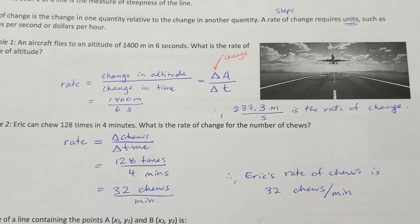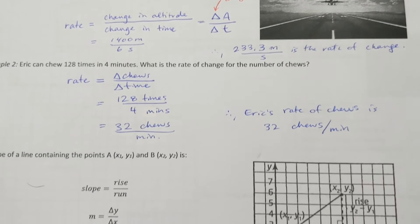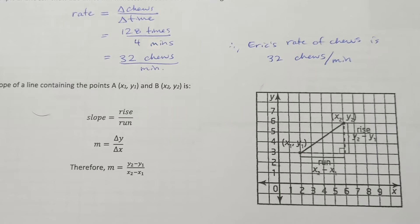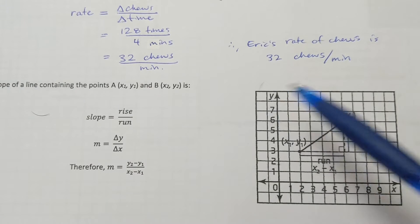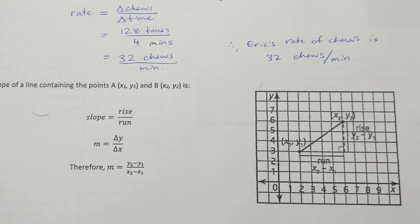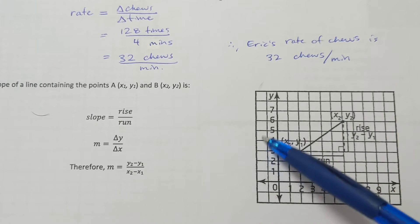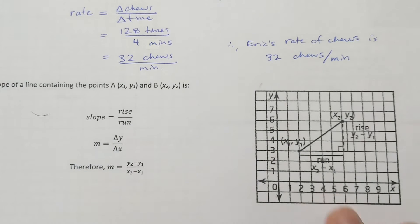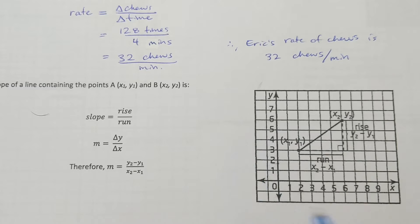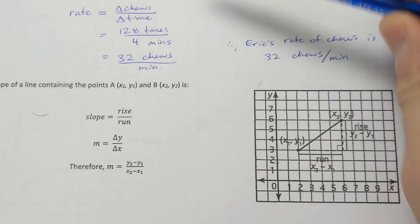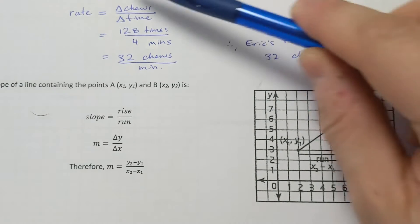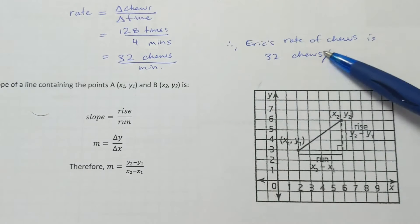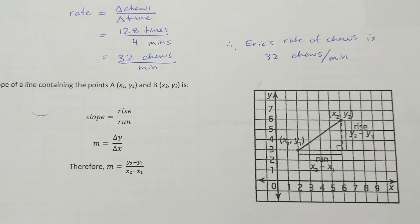Now let's look at slope in terms of a graph. As you can see, this graph just has y and x with no context — it's not altitude per second or chews per minute. So when we calculate slope here, there will be no units because there are no units on this graph. But remember, when calculating rate of change in a contextual question, units are required.